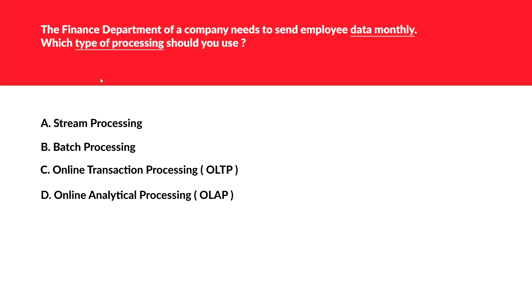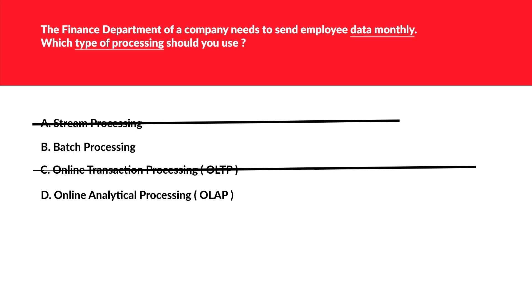This question is related to workloads — the keywords are 'monthly data' and which type of processing applies. Stream processing doesn't fit because this is monthly data, not production or current data. OLTP is for business transactions and OLAP is for business analysis and data mining. So we arrive at batch processing as the correct option.